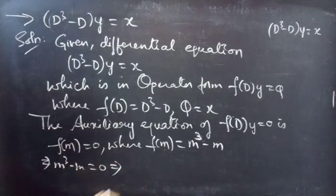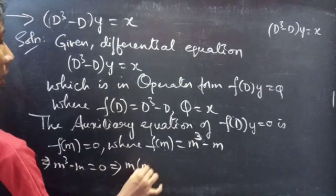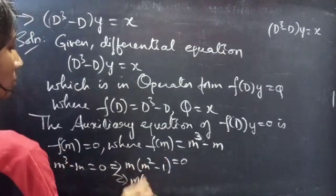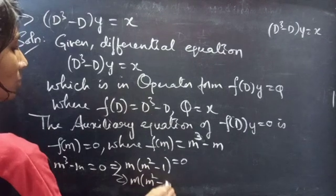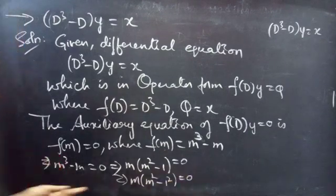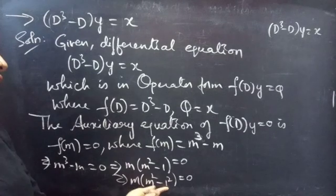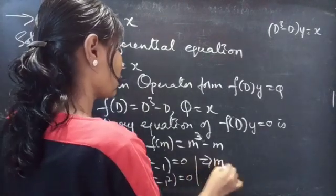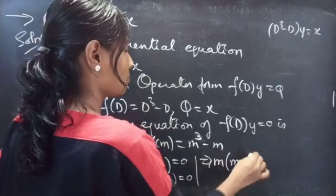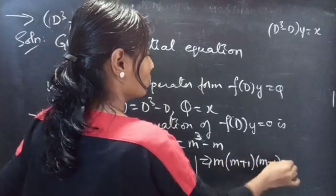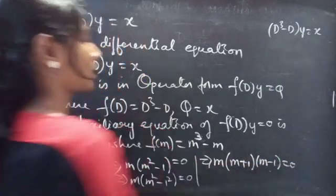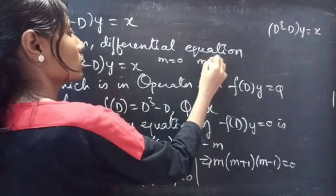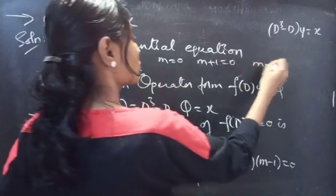Take m common from these two terms: m(m² - 1) = 0. Write m² - 1 as m² - 1², which looks like a² - b². We can factor a² - b² as (a + b)(a - b), giving m(m + 1)(m - 1) = 0. Equating each factor to zero: m = 0, m + 1 = 0, m - 1 = 0.